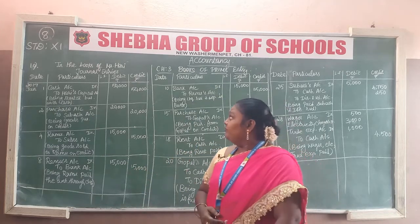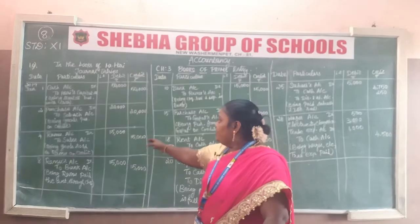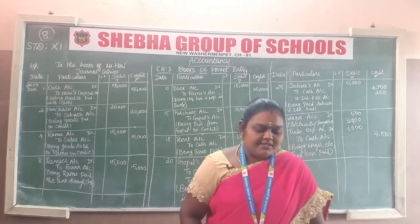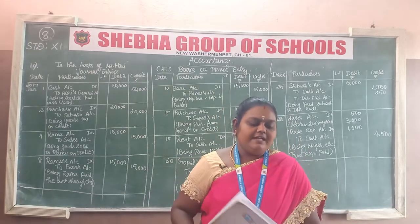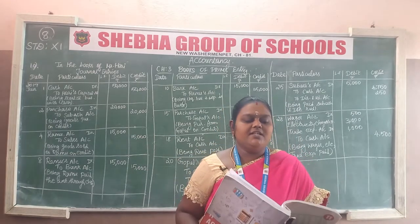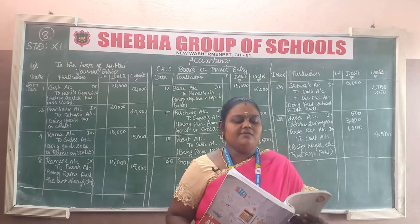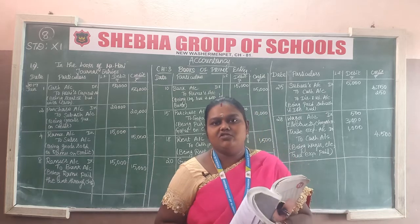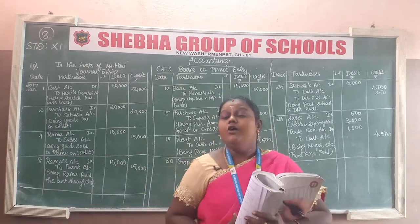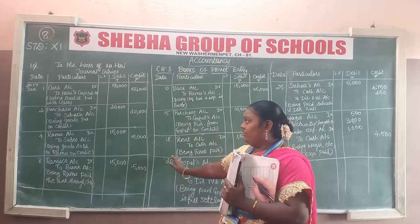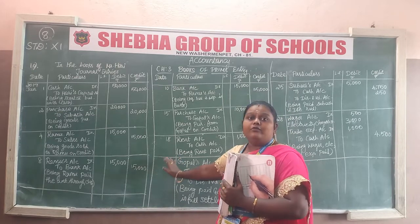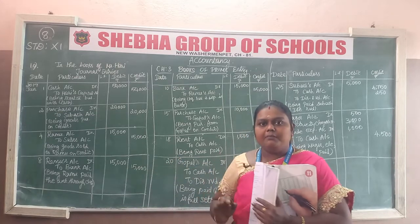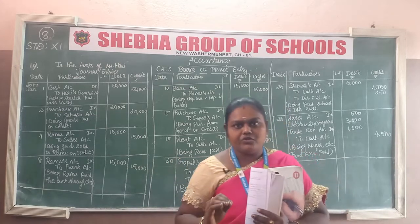We are going to discuss the 10th sum today. Pass the journal entry in the books of Harry, who is a dealer in sports items. We are going to cover some transactions explained in the books of Mr. Harry.